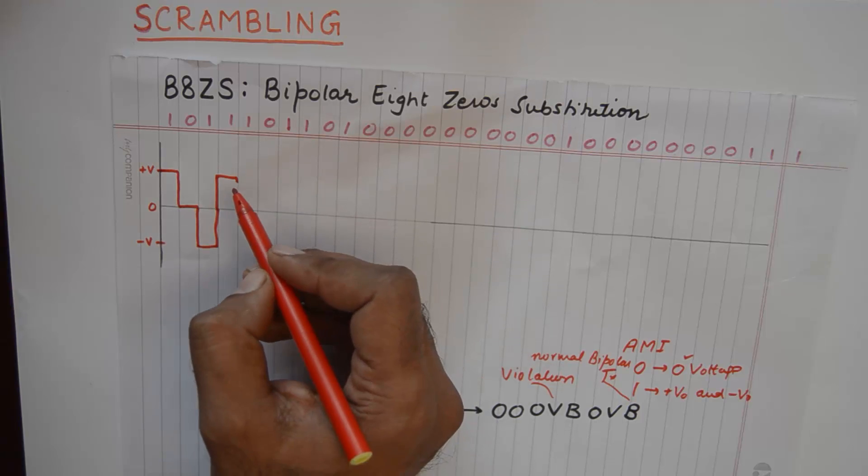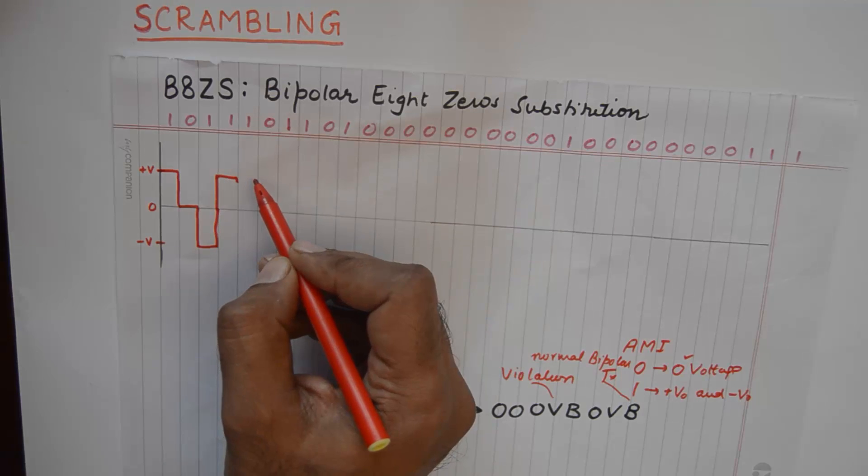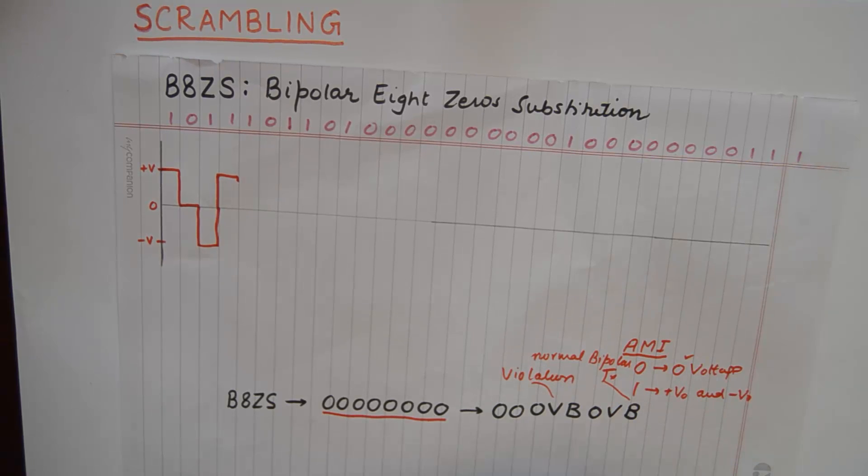And a violation would be something if this one is getting a plus V and the next one also gets a plus V, that will be a violation. Not following the normal routine course of AMI will be a violation.